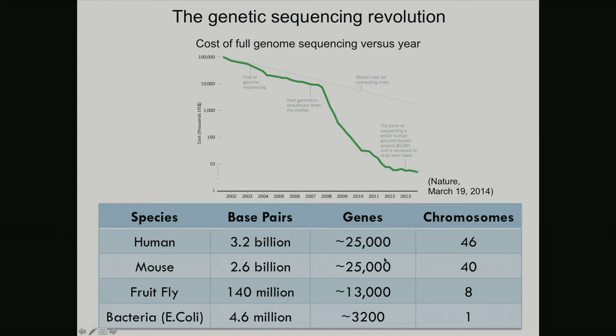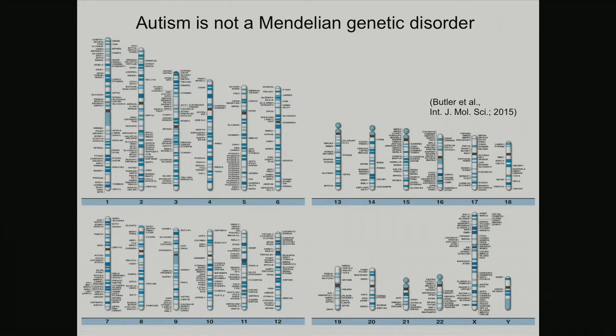There are about 25,000 genes in the human genome — a very similar number to mice. So it seems like we have a great tool: this is a genetic disease, we have the ability to sequence lots of things. Let's go to work — this should all be simple, right?